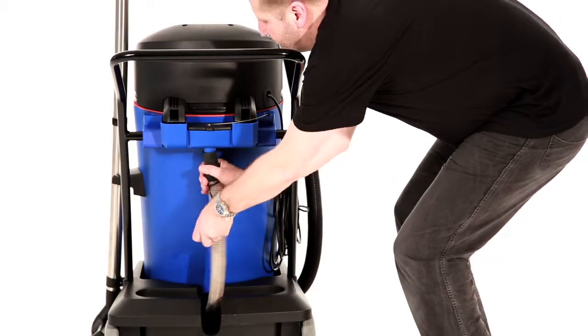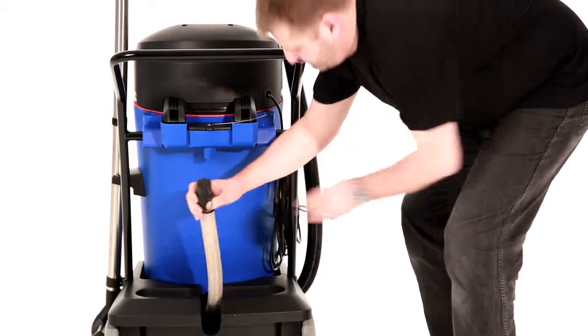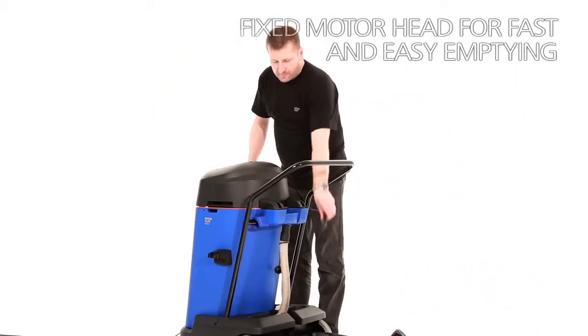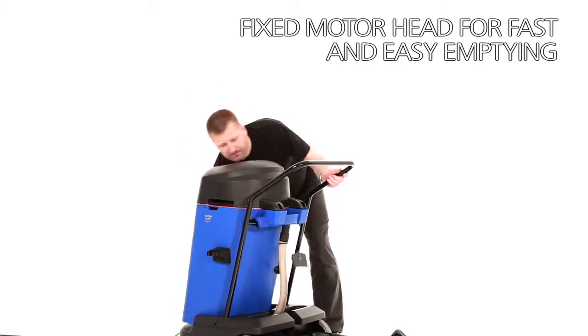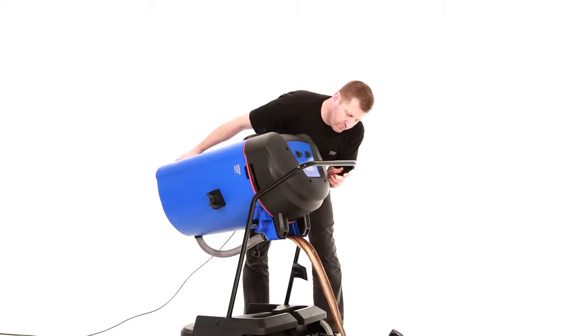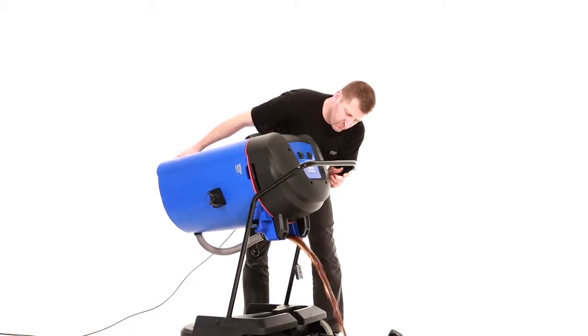After finishing your job, the container can be emptied nice and easily, either by using a drain hose or by tipping the machine and pouring the water out through the emptying spout. The fixed motor head acts as a counterbalance to the weight of the fluid, making the lift even easier.